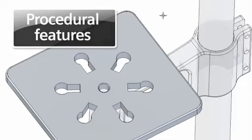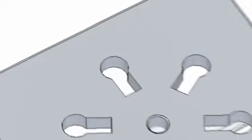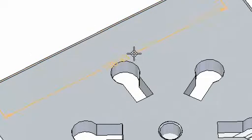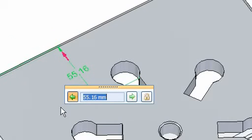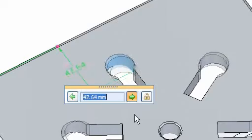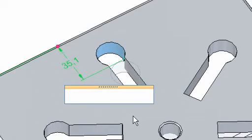Let's take a close look at a new technique we call procedural features using a pattern. Notice how a dimension can be used to change either the overall shape or the size of the pattern. Notice while the pattern was created last, it can drive the initial base shape, a first for CAD.